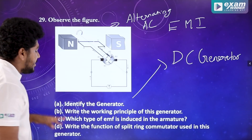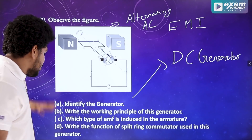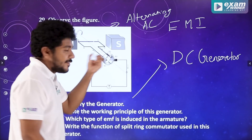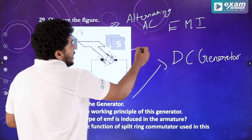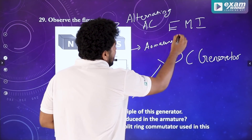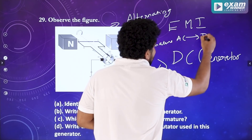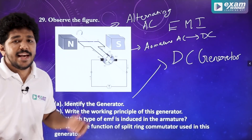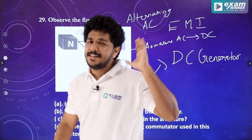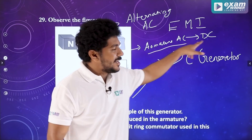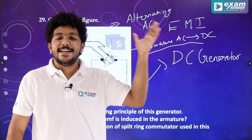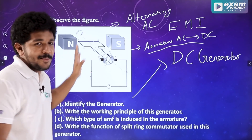There is DC. Last part: write the function of the split ring commutator. What is the split ring commutator? It converts the AC EMF to DC EMF as output. Basically, it converts AC to DC.